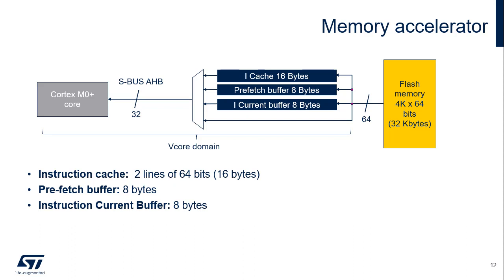The flash memory controller also implements an instruction cache of 16 bytes. Each time the requested instruction isn't in the current and prefetch buffers, the line is copied into the instruction cache. If an instruction contained in the instruction cache memory is requested by the CPU, it's provided without inserting any delay. Once all the instruction cache memory lines are filled, the least recently used (LRU) policy is used to determine the line to replace. This feature is particularly useful in case of code containing loops. Instructions at the branch target address will be present in the instruction cache. Both the prefetch buffer and instruction cache are enabled or disabled by software, and the instruction cache can also be reset by software.